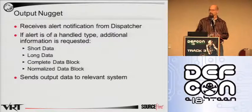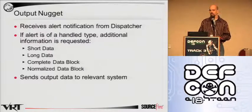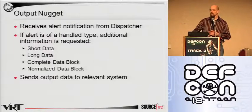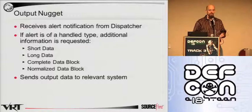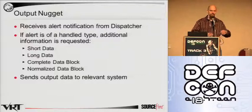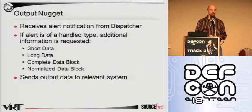Output nuggets, as you'd expect, provide a user interface or a means for providing alerting and other kinds of data to the operator. Whenever an alert is generated, the dispatcher will talk to each of the output nuggets to say there's an alert available. The output nugget, if it decides that it's interested in that type of data, will then ask for additional information. One important element is the normalized data block — if there's some analysis we do on the data before alerting, like uncompressing data or deobfuscating JavaScript, we actually give you access to that. It really doesn't do you much good if we say there's something bad in a file and you're just looking at a compressed data block.